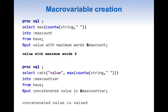Now let's quickly look into macro variable creation. We can create a macro variable by using an INTO clause, and by doing MAX on our COUNTW function we can get the max value into a macro variable. Whenever we create a macro variable, we always need to keep one thing in mind: use %PUT to check the value. Here we can see the value in the log as six.